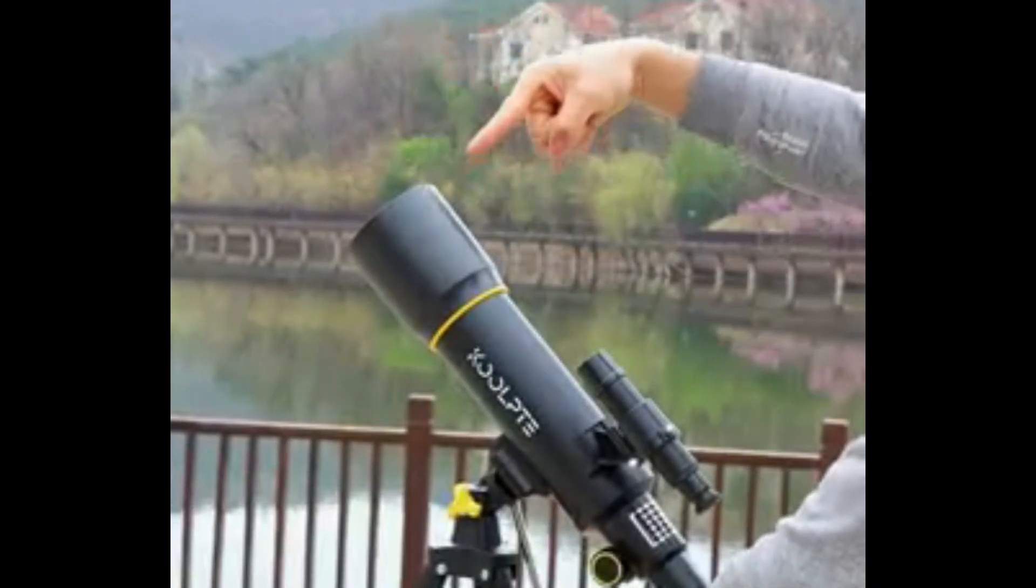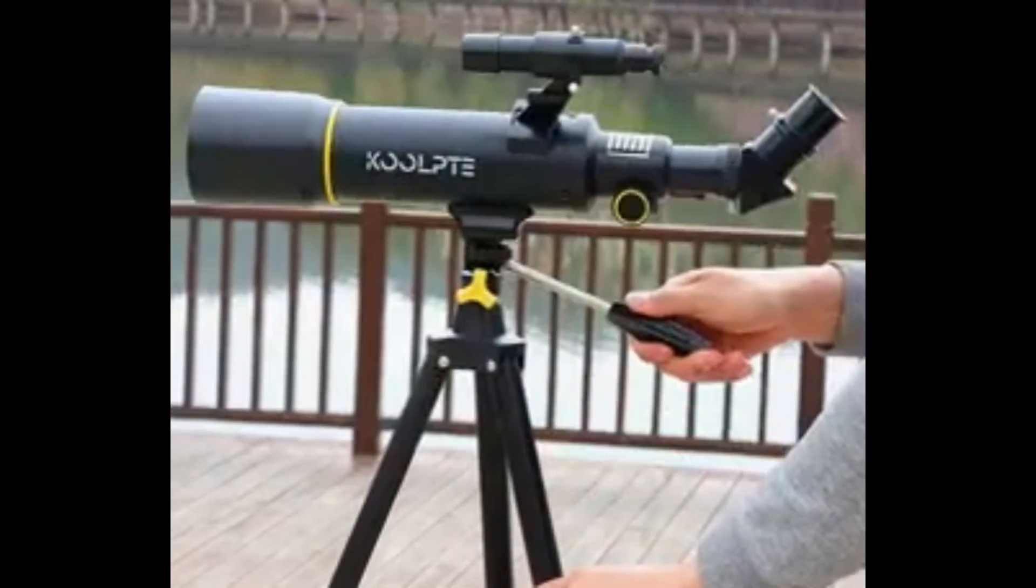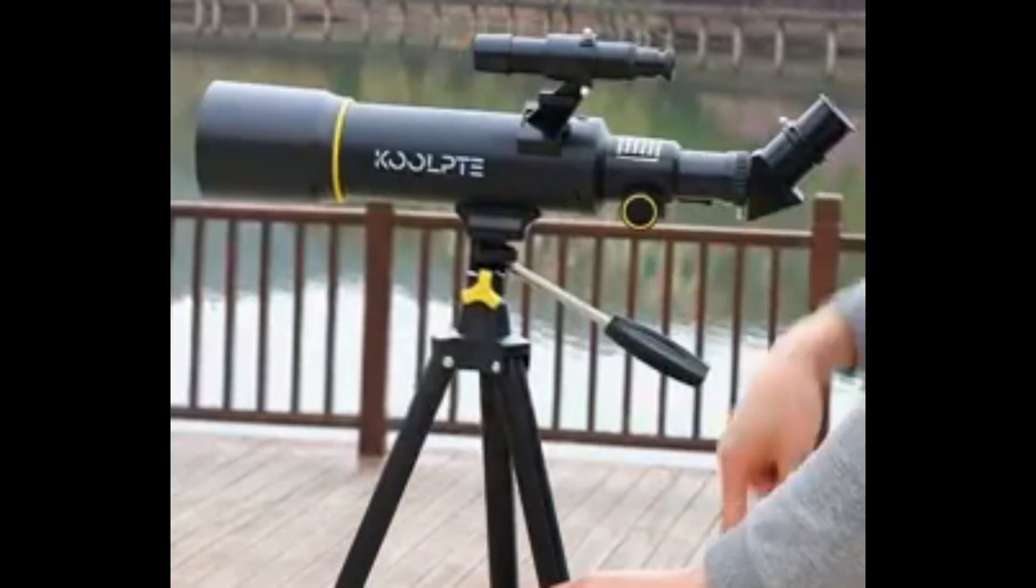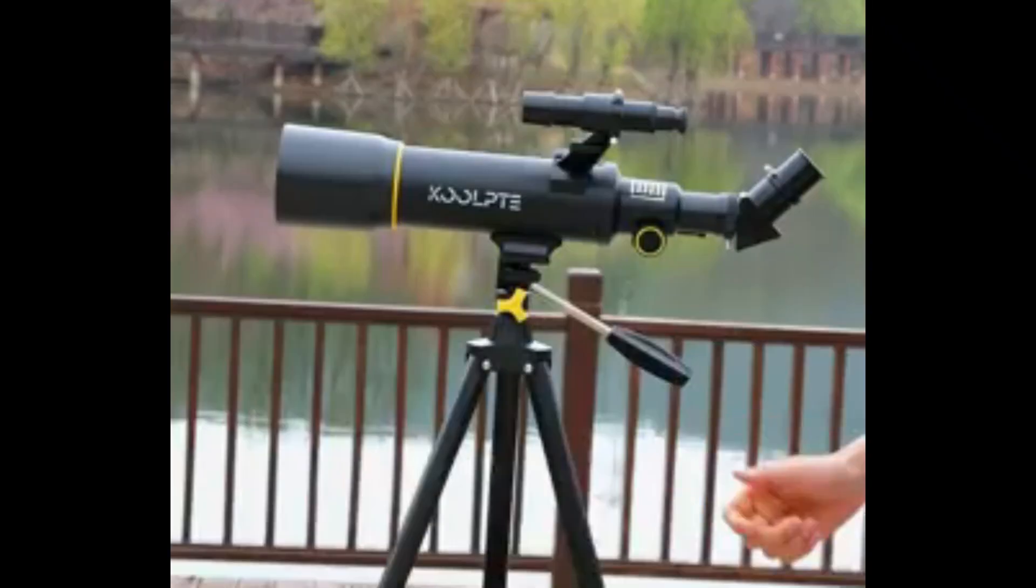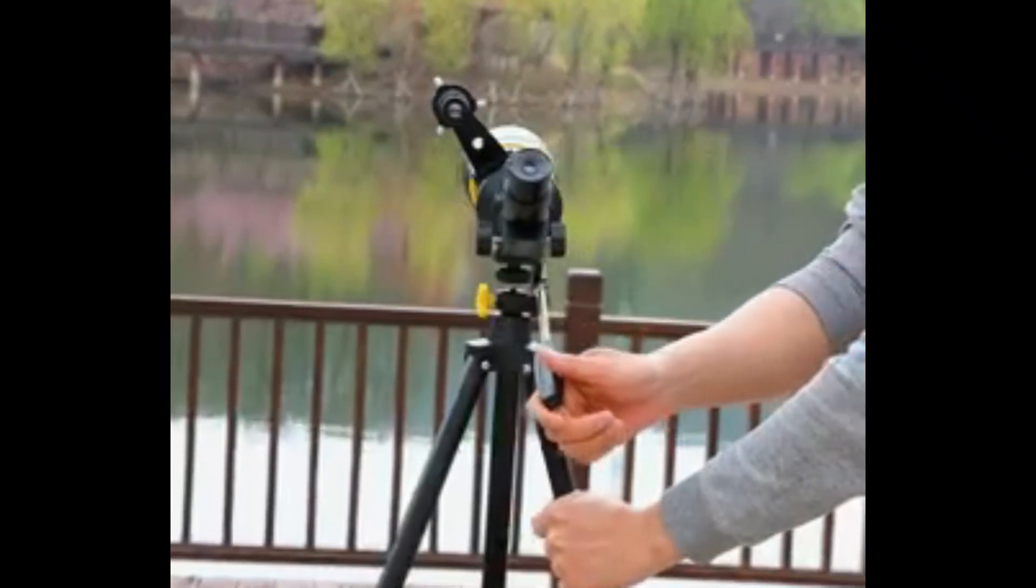70mm Large Aperture, the telescope equipped with a focal length of 400mm f/5.7 and an aperture of 70mm, good light collecting ability, imaging brighter, making it an excellent choice for amateur astronomers who want to explore the night sky.